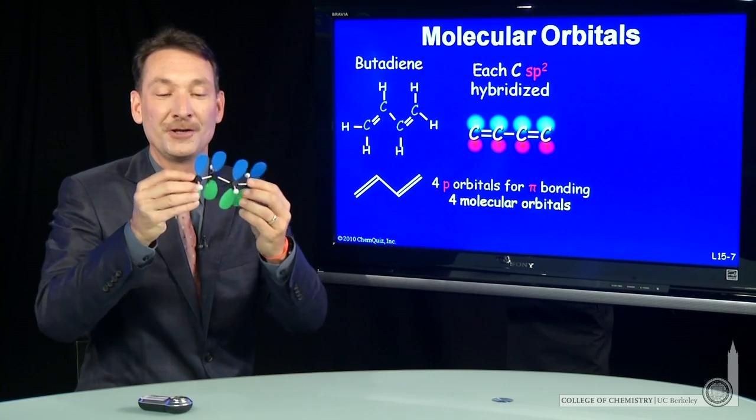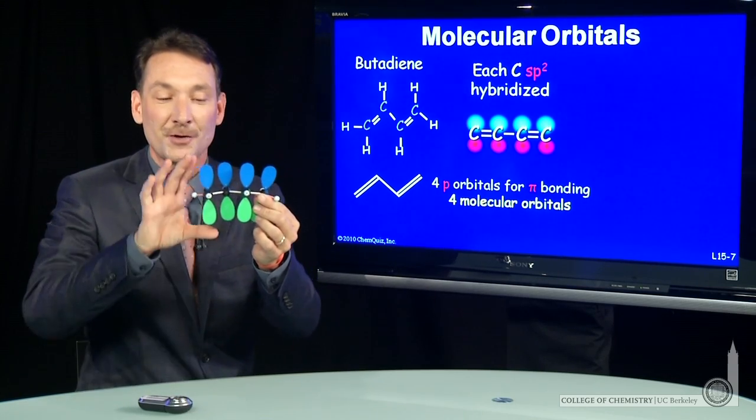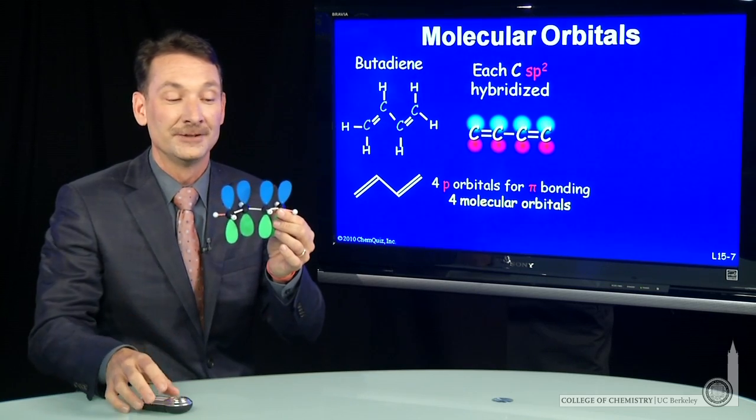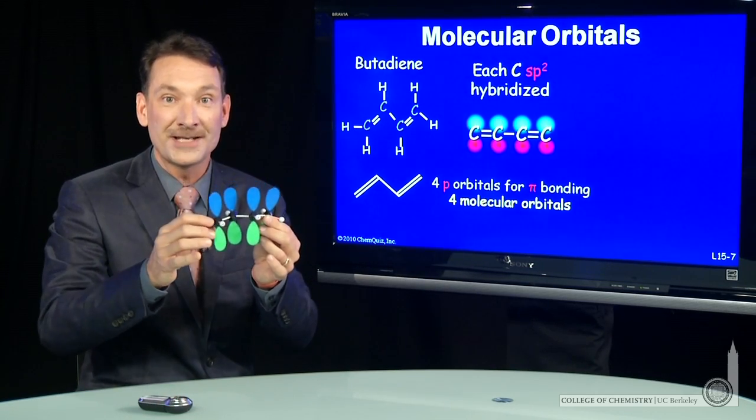sp2 leaves behind a p orbital, and here they are above and below the plane of the molecule. So a p orbital left over on each carbon. I can form from these one, two, three, four atomic orbitals, four molecular orbitals.